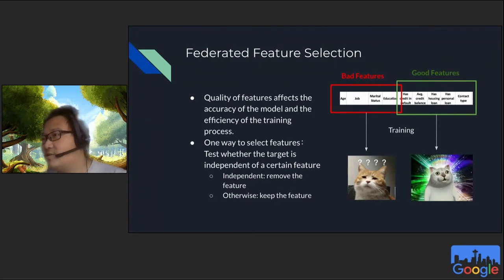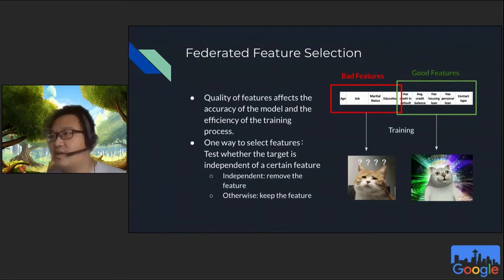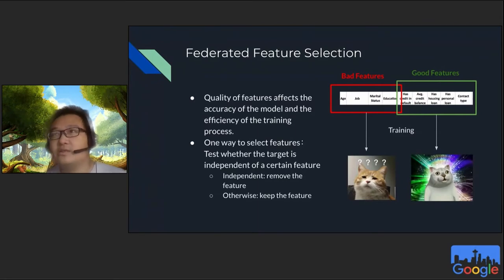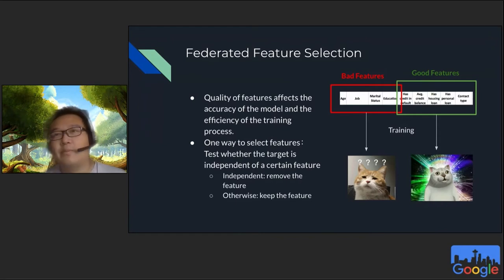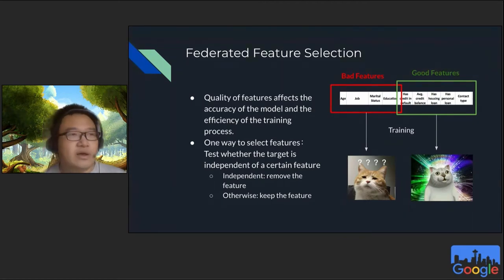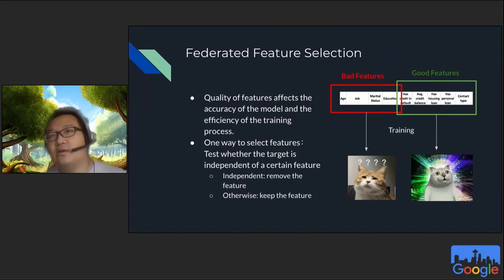The motivation for federated feature selection: features are of great importance to machine learning accuracy. If you have bad features, accuracy will be very bad; if you have good features, accuracy will boost a lot. In federated learning there's an additional advantage to using a smaller number of features: reduced communication and computation cost on mobile devices. Also, some work shows that using fewer features makes models more robust and better generalizable. One way to select features is to do correlation tests between features and the target — if a feature has very high correlation to your target, keep it; if not, you can throw it away.